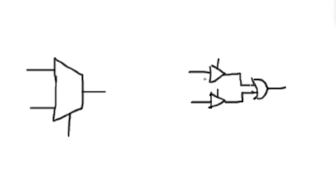With these buffers, if the buffer is disabled, the input's not getting through. With the buffer enabled, it is getting through. What we want is for these buffers to complement each other — so if one buffer is enabled, the other is disabled, and vice versa. The easiest way to do that is to just use an inverter.